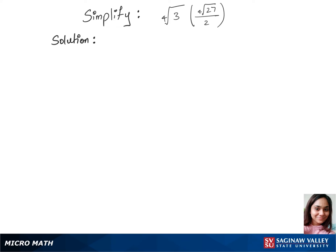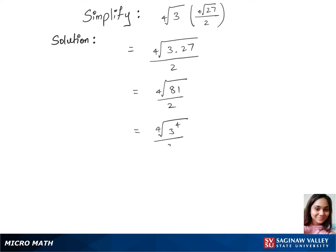We'll simplify this question by first multiplying the first and second part, which is the 4th root of 3 times 27 over 2. In the next step, we multiply 27 and 3 under the 4th root, giving us the 4th root of 81 over 2. Now we write 81 as 3 to the power of 4, under the 4th root, over 2.